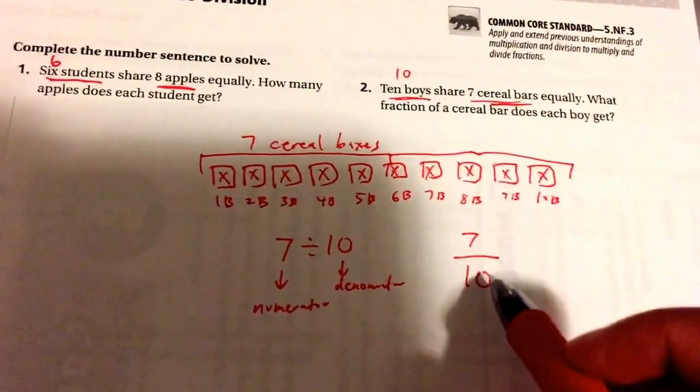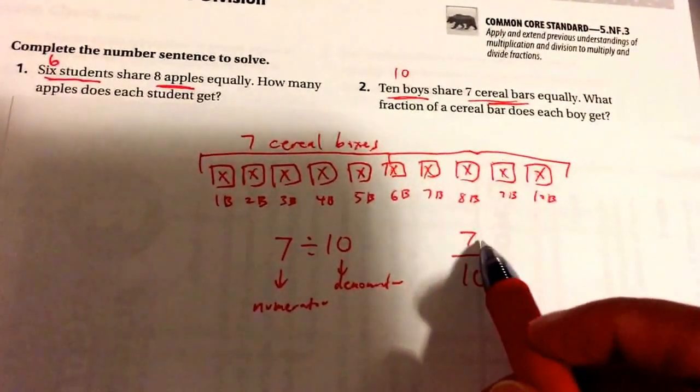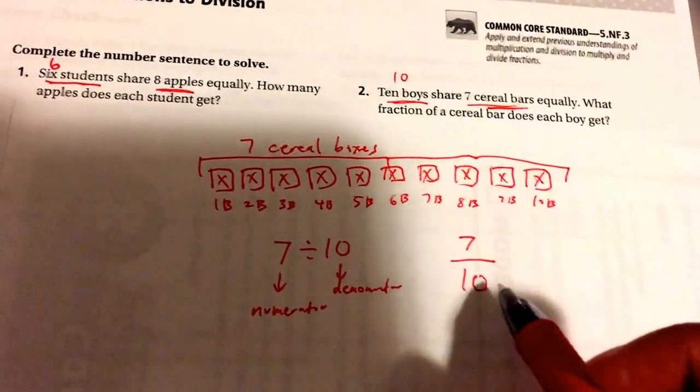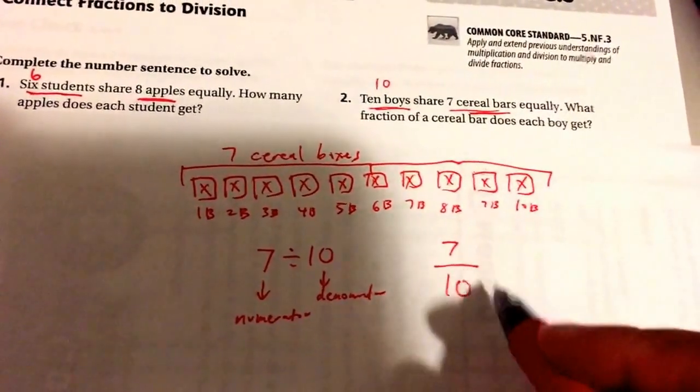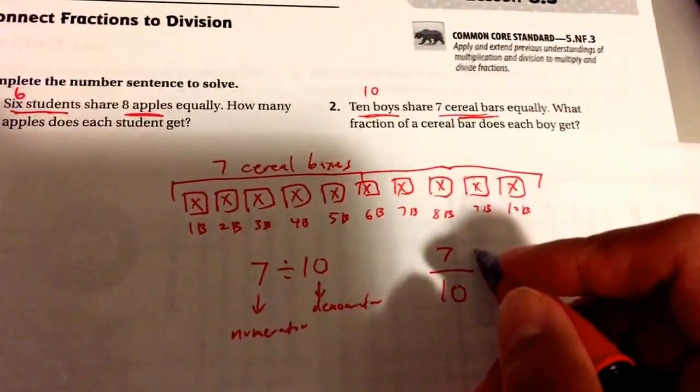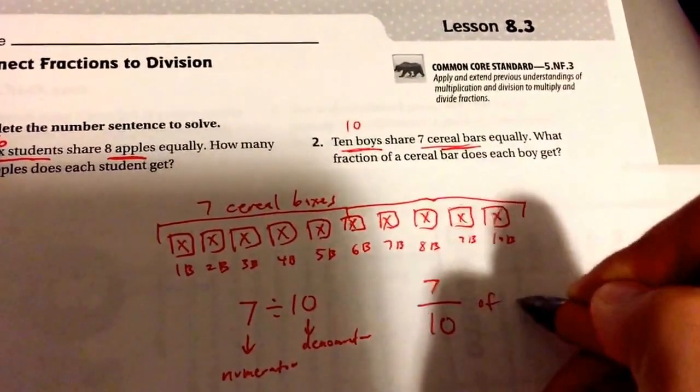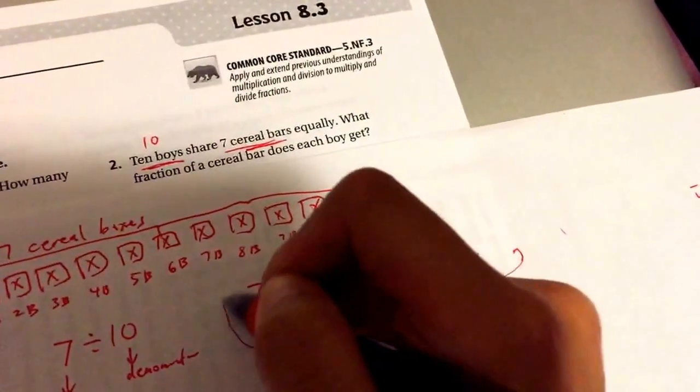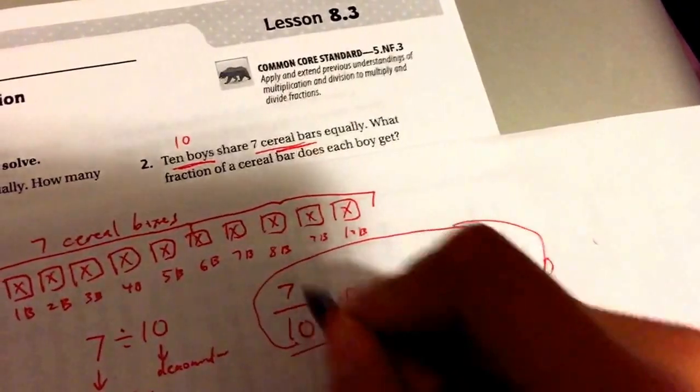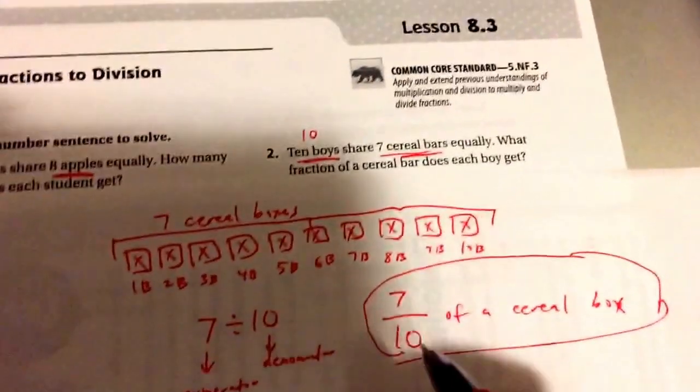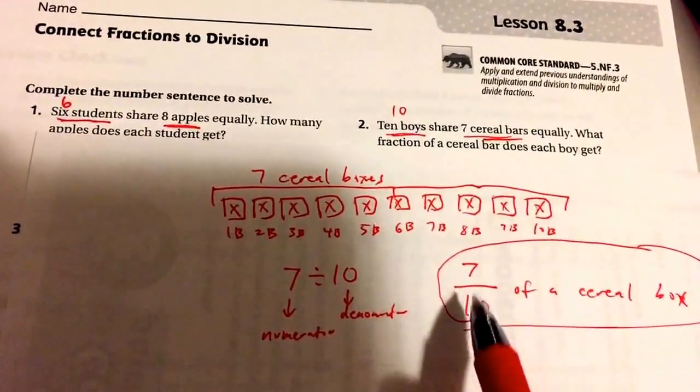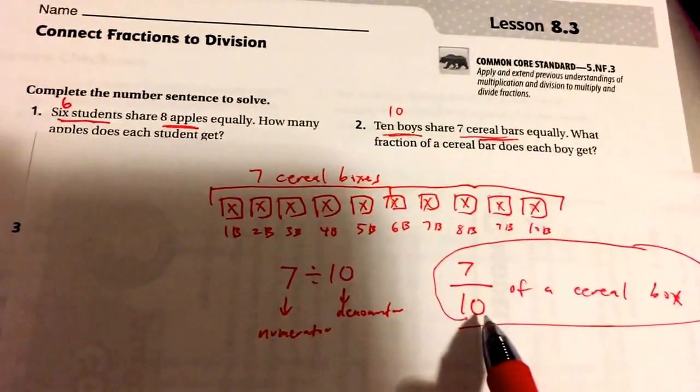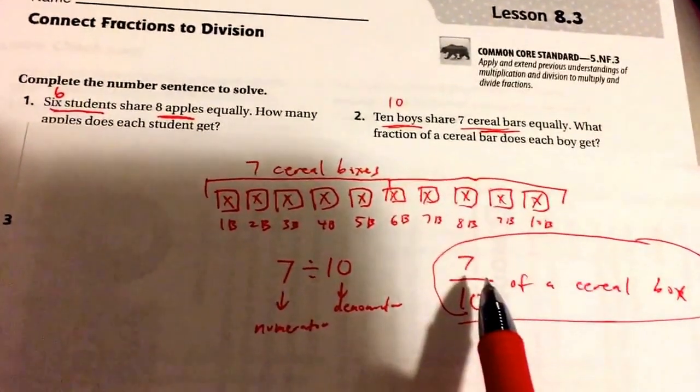Now, is there a number that can go into both 7 and 10 to reduce it? Well, the factors of 7 are 1 and 7, and the factors of 10 are 1, 2, and 5, and 10, so no, there's no number that can be into both of them. So our final answer is 7 tenths of a cereal box. Keep in mind that unlike the other problem, we didn't have to put inside the house because the numerator is not bigger than the denominator, and there's no numbers to reduce. Our factors of 7 are 1 and 7. The factors of 10 are 1, 2, 5, and 10. Nothing overlaps, so there's no dividing by top and bottom.